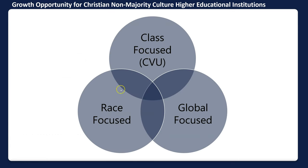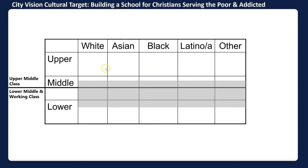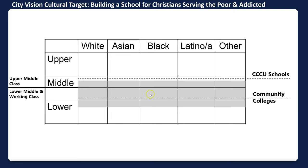That's a big part of what we're trying to address with City Vision. For non-majority culture institutions, some are race-focused, some are global-focused — I got my doctorate at Bakke University where 70% of students are outside the US — and some are class-focused, which is more where we are. Our cultural target is building a school for Christians serving the poor and the addicted. Traditional Christian colleges in the CCCU are largely serving upper-middle class, while community colleges often serve lower-middle and working class. We span a pretty wide group.